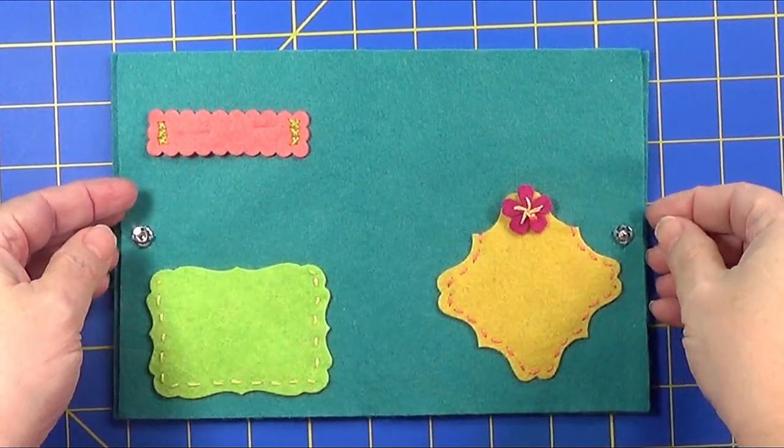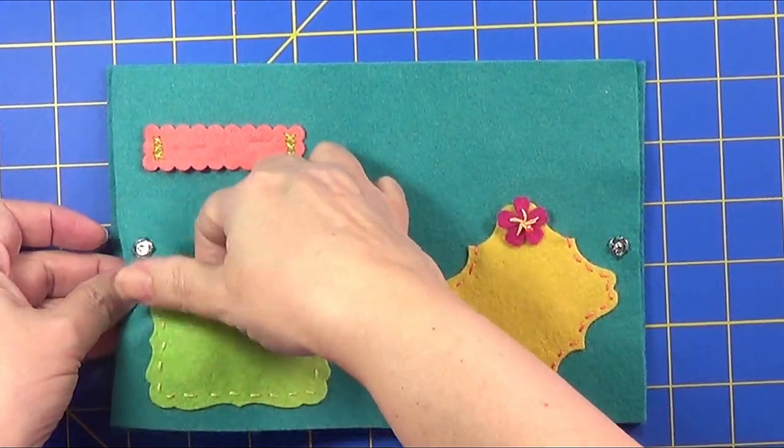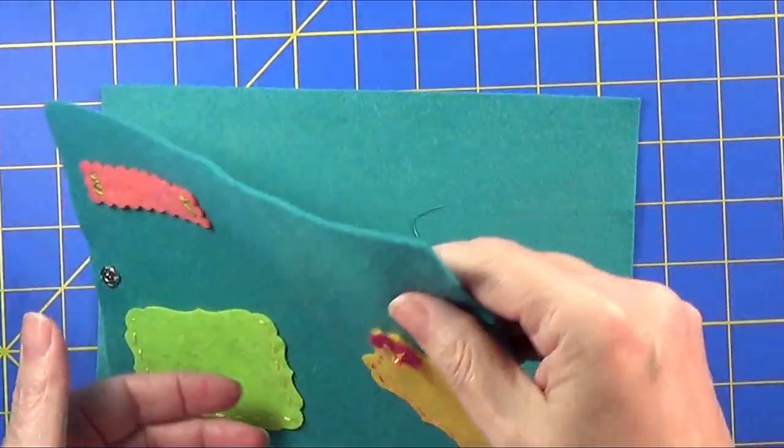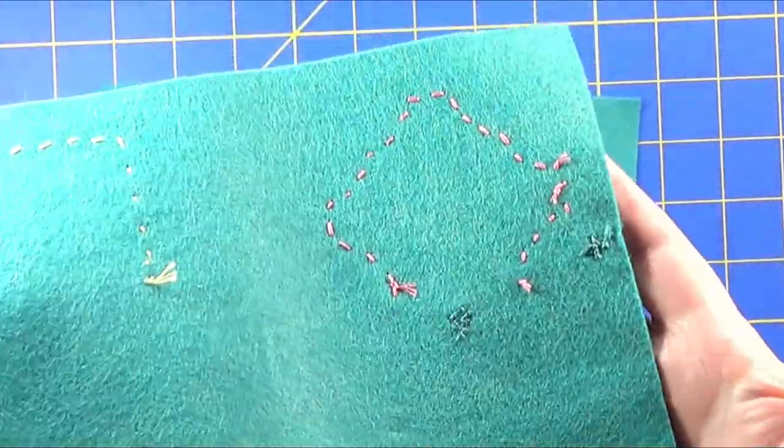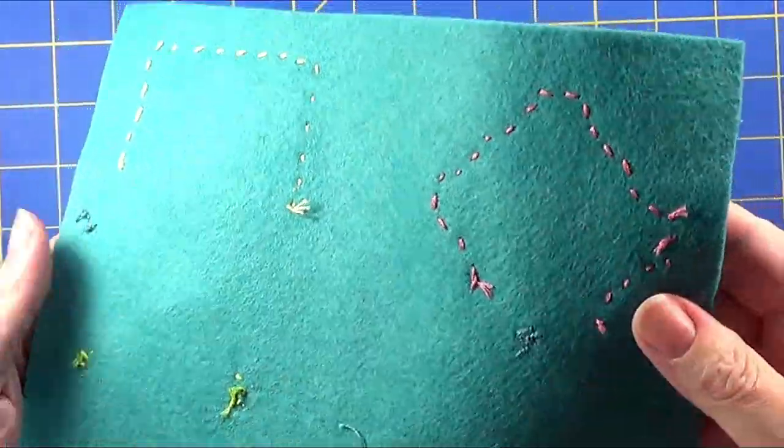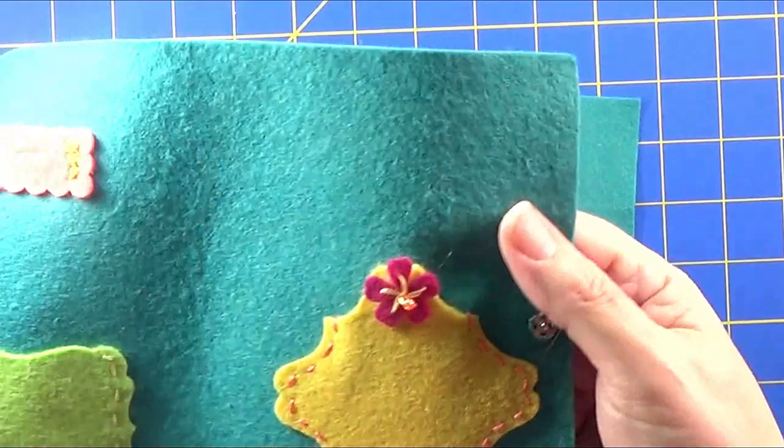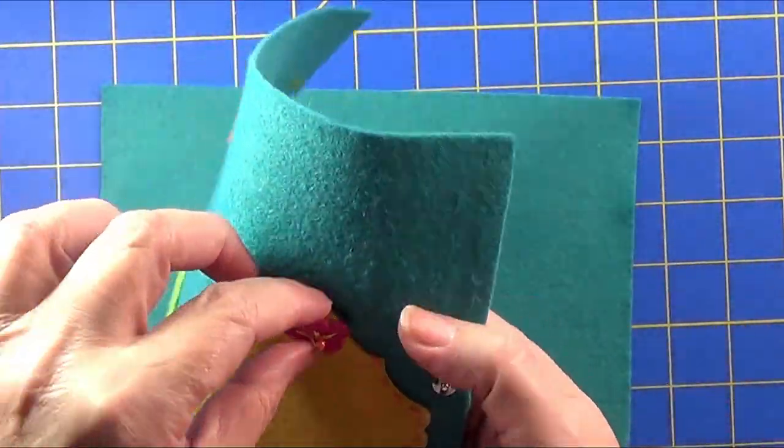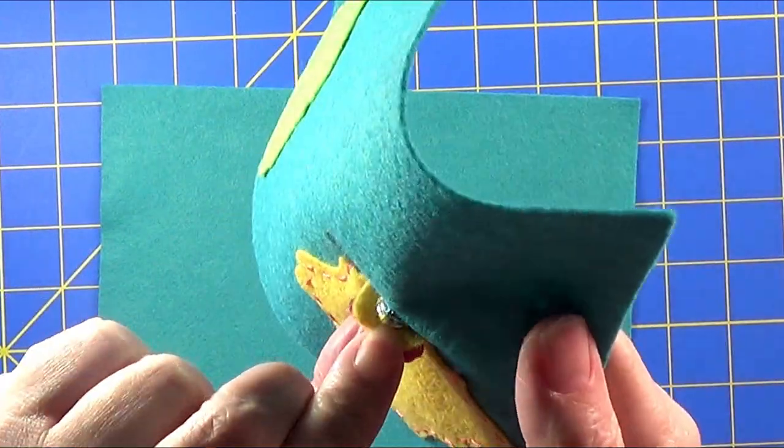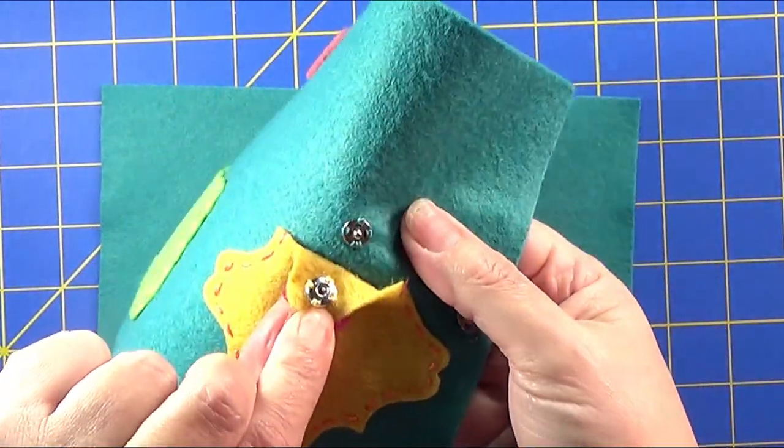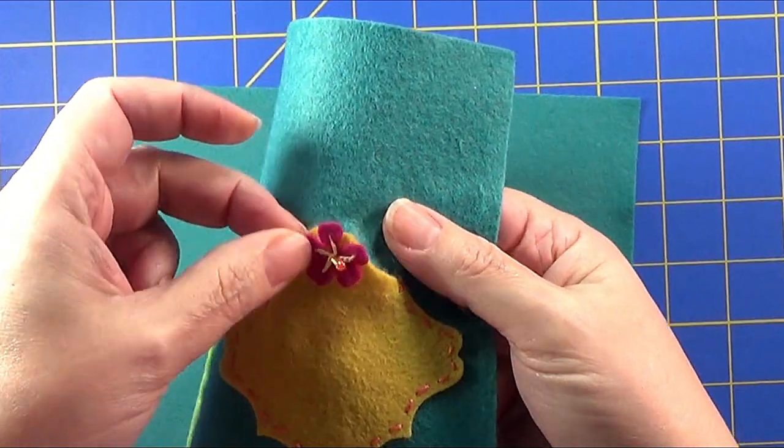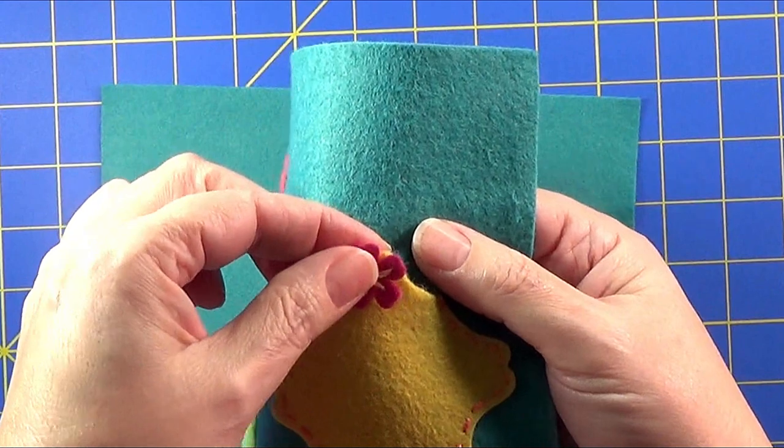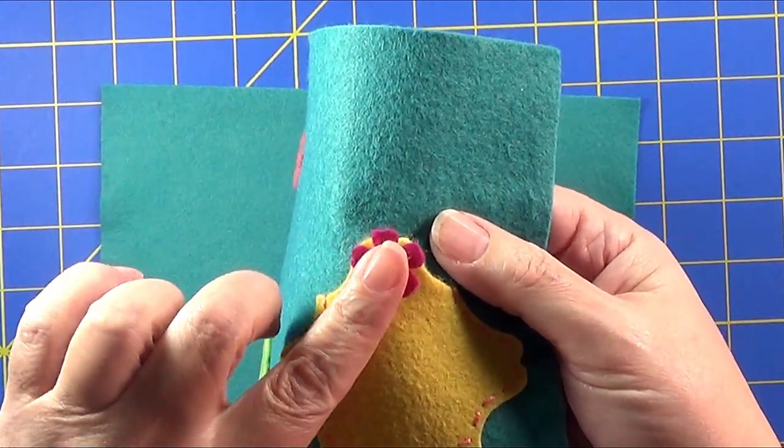I have finished attaching all of my little pockets and things to my inside cover. I attached it with embroidery floss, just simple running stitch or straight stitch around the back.